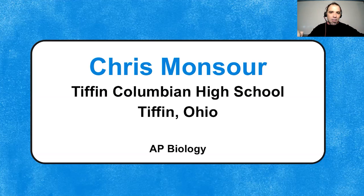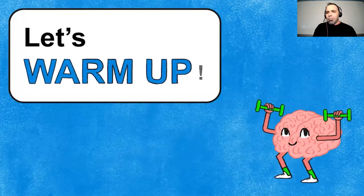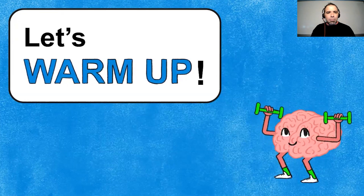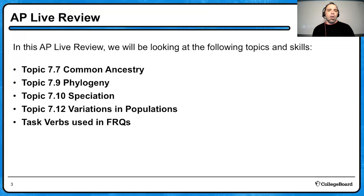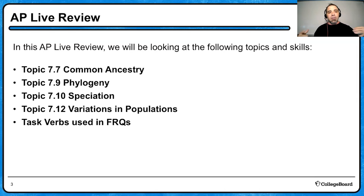Get some pencils out, settle in, grab yourself a snack because we're going to be working our way through the second part of natural selection. Let's do a warm up — it's always important to get those brain cells going. In this review we're going to be looking at the following topics and skills: common ancestry 7.7, phylogeny 7.9, pipe cleaner cladograms, topic 7.10 speciation, 7.12 variations of populations, and task verbs used in FRQs. We're also going to be talking about the last two types of FRQs you have to write. I hope you're ready to go.